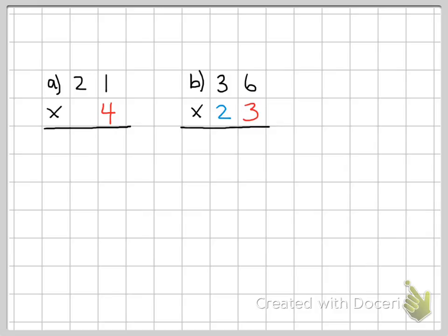Let's take a look at question A. First, because we're dealing with the ones column, we're going to change the color to red. 1 times 4 is 4, and then 4 times 2 is 8. So the answer to 21 times 4 is 84.